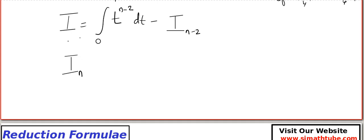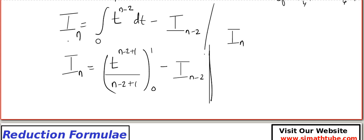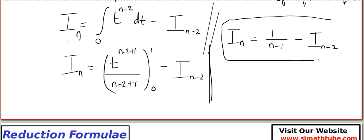Now we are ready to integrate. I_n equals t^(n-2+1) divided by (n-2+1), evaluated from 0 to 1, minus I_(n-2). When you plug in the limits you end up with I_n equal to 1/(n-1) minus I_(n-2). This is the reduction formula because we are able to write the term with n in terms of n minus something — the bigger number in terms of the smaller number.